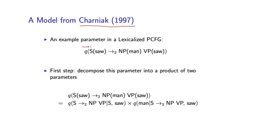So here's one example parameter, which I'll use as an example throughout this section. It's a parameter associated with s-saw going to np-man-vp-saw.